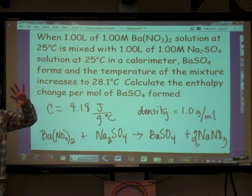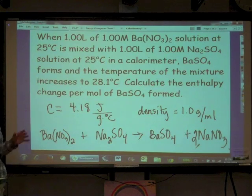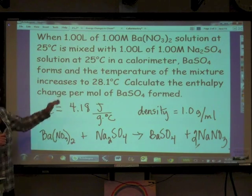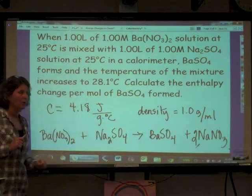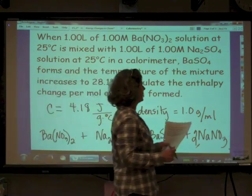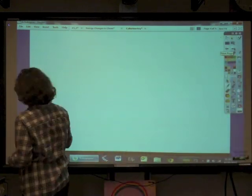We're pouring these two solutions together in a calorimeter, which in this case is probably just an insulated styrofoam cup. We're looking at the temperature change, and based on this temperature change and the given information, we can find delta H for this reaction. We will use Q = mcΔT.